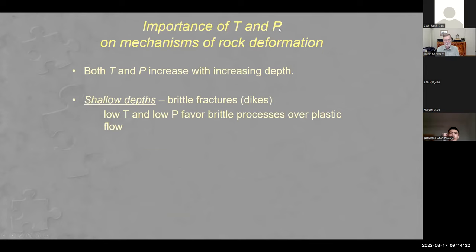Temperature and pressure have a big control on the mechanisms of rock deformation. Cold rocks usually fracture rather than flow; high pressure inhibits fracture and allows ductile or plastic deformation to take place. At shallow depths, brittle fracture occurs — dikes are formed — because low temperatures and low pressures favor brittle processes over plastic flow processes.